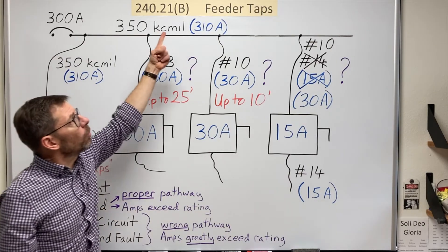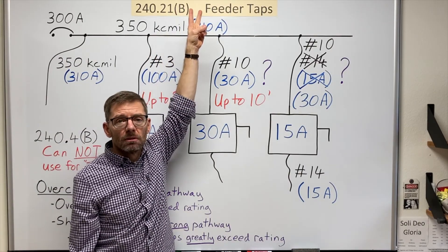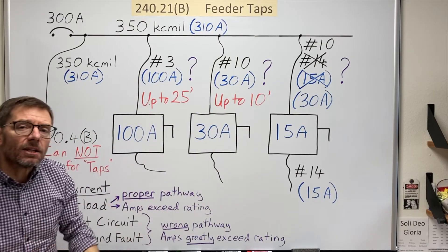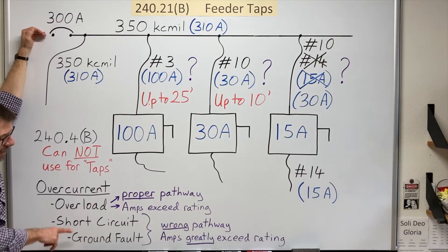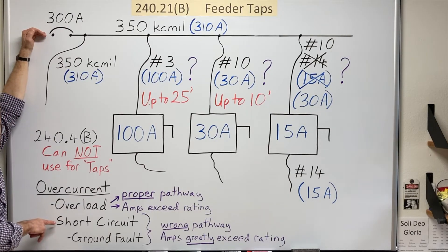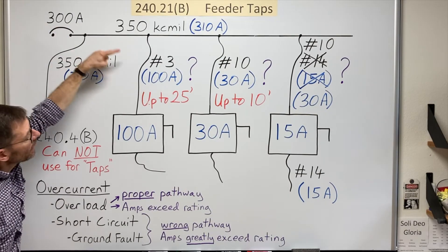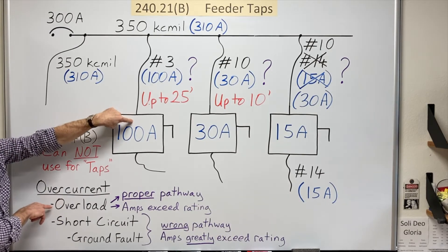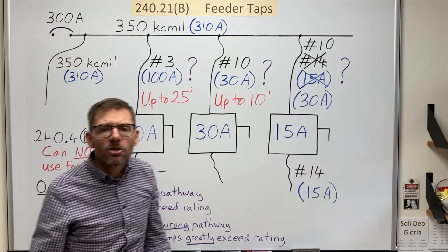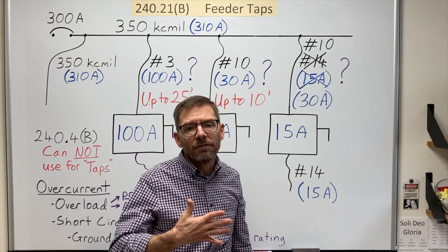So here we've looked at B1 and B2. And if you understand the main concepts here, one of them being that the upstream device provides the short circuit protection. And the downstream device provides the overload protection. You should have a fighting chance at understanding three, four and five.